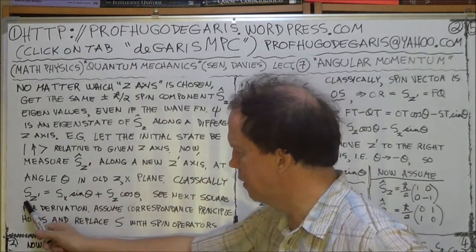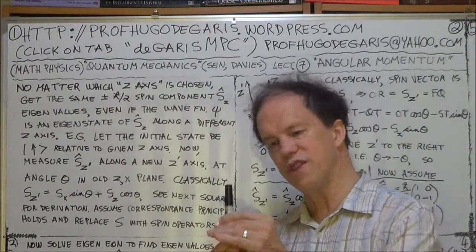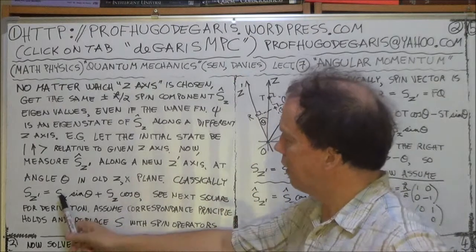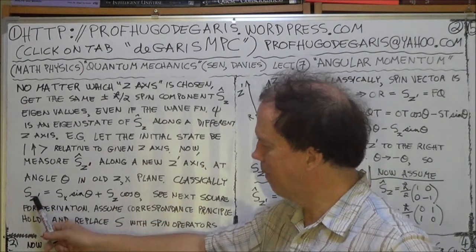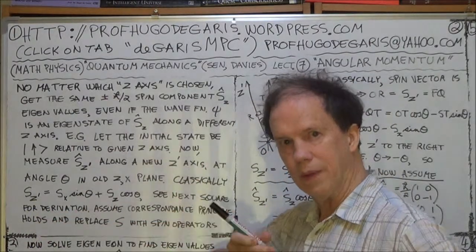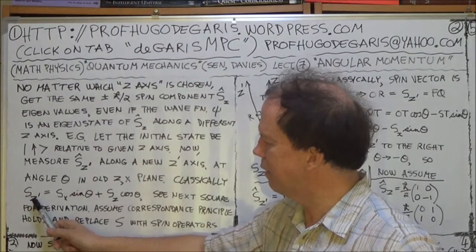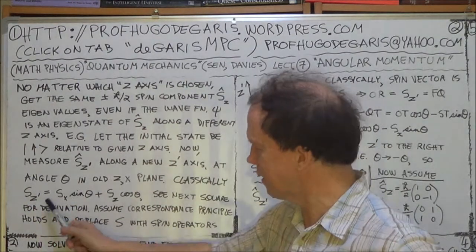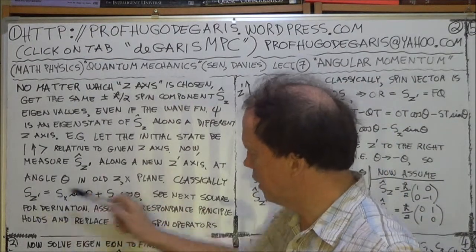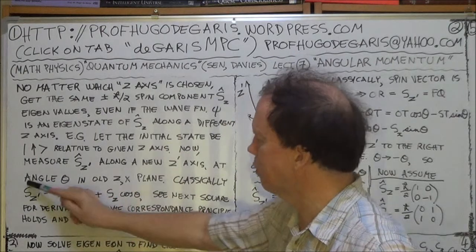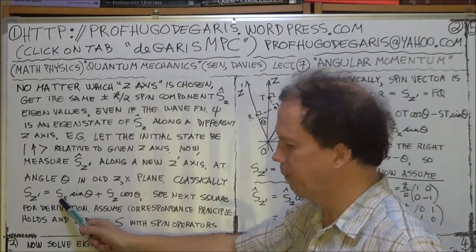So we'll assume that this classical relation here is more or less valid for quantum mechanics as well with one difference, that these physical quantities, measurable quantities in classical mechanics, become operators in quantum mechanics. So these three quantities, this would be the component of the intrinsic spin, let's say thinking classically along the x-axis, this would be the component of that same spin along the z-axis, and this is the component of the same spin, the same S thinking classically along the z-dashed axis.